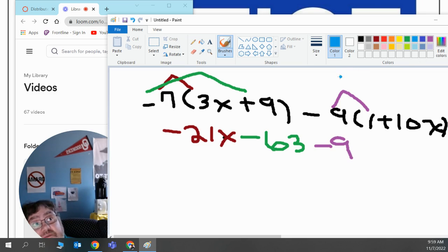Then I'll multiply negative 9 times positive 10x with the x. Negative times positive 10 should get me negative 90x's.